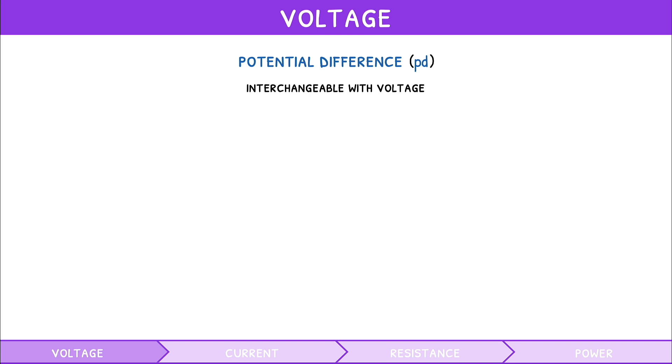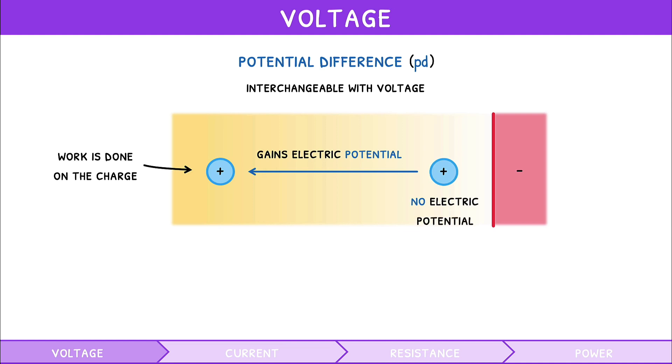Well, if you place a test charge right next to a charge distribution and then move it, we know that work is being done on the test charge. As a result, the test charge gains energy, called its electric potential energy, or electric potential. Right next to the charge distribution, it had no electric potential, but further away from it, it now has electric potential. It is this change in potential that is called the potential difference.